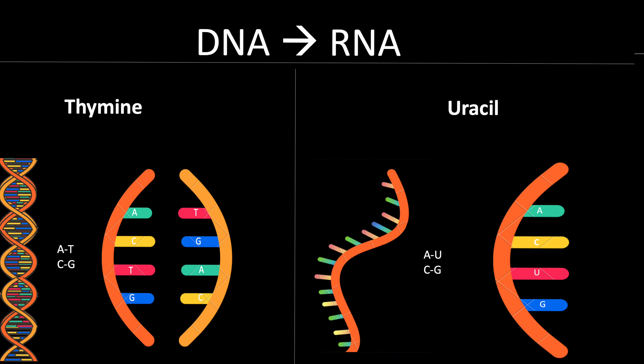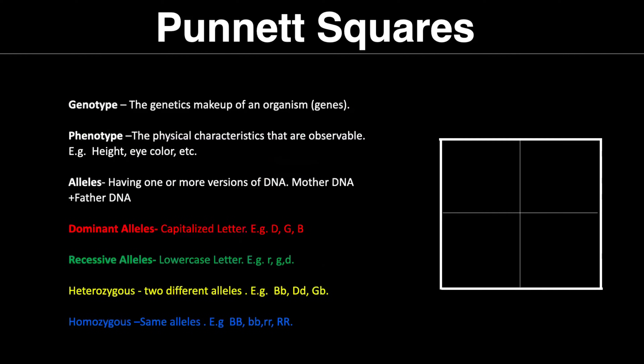Punnett squares. Punnett squares are a basic tool scientists use to predict genetic patterns. To understand them, we must understand a few definitions. Genotype is the genetic makeup of an organism. Phenotype is the physical characteristics that are observable, like your eye color or your height.